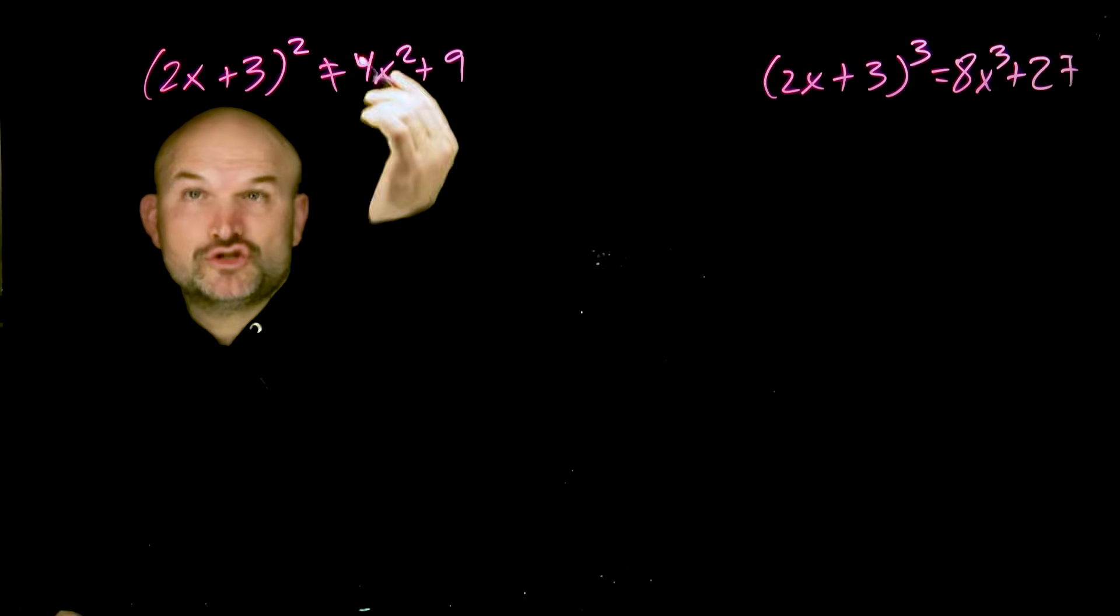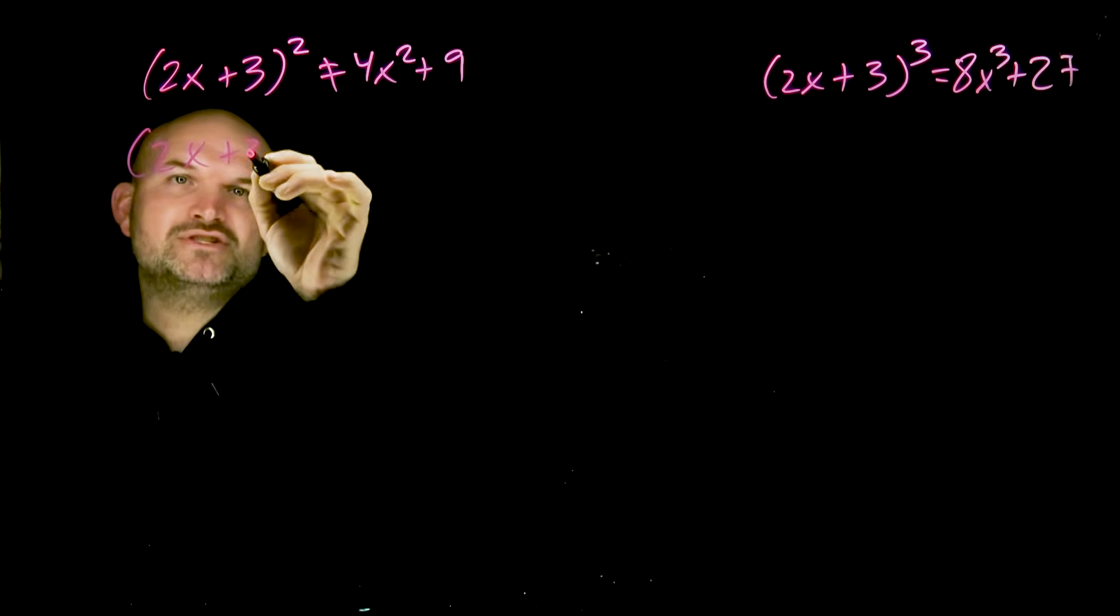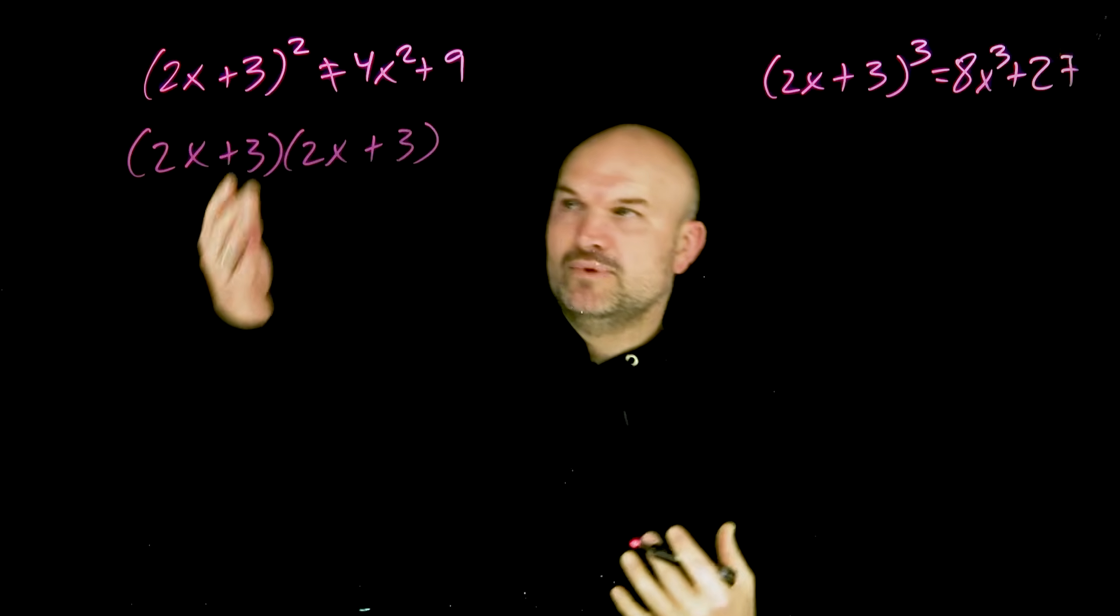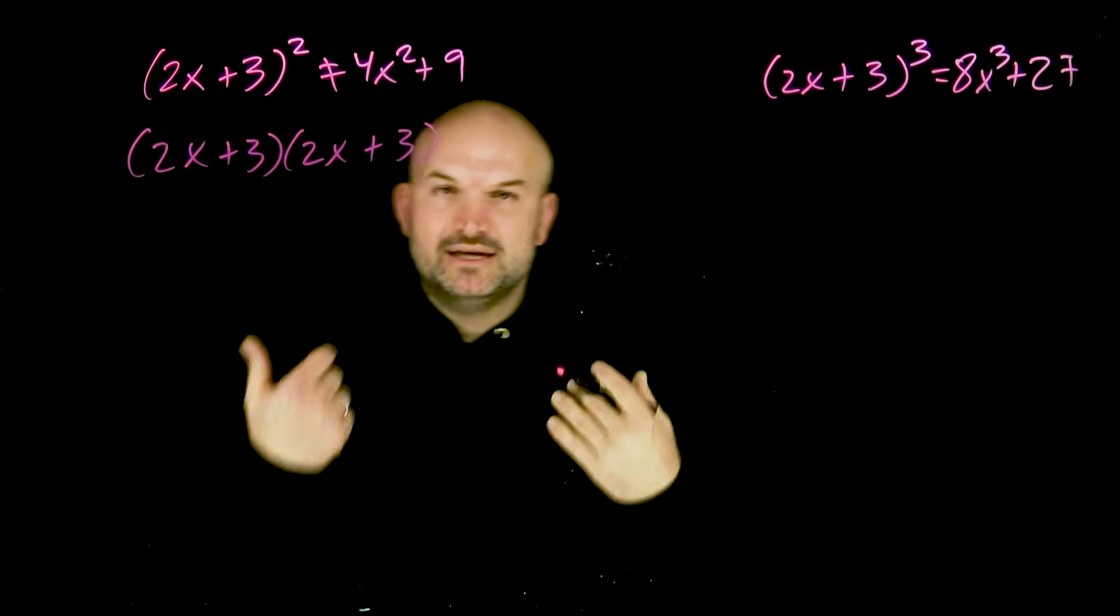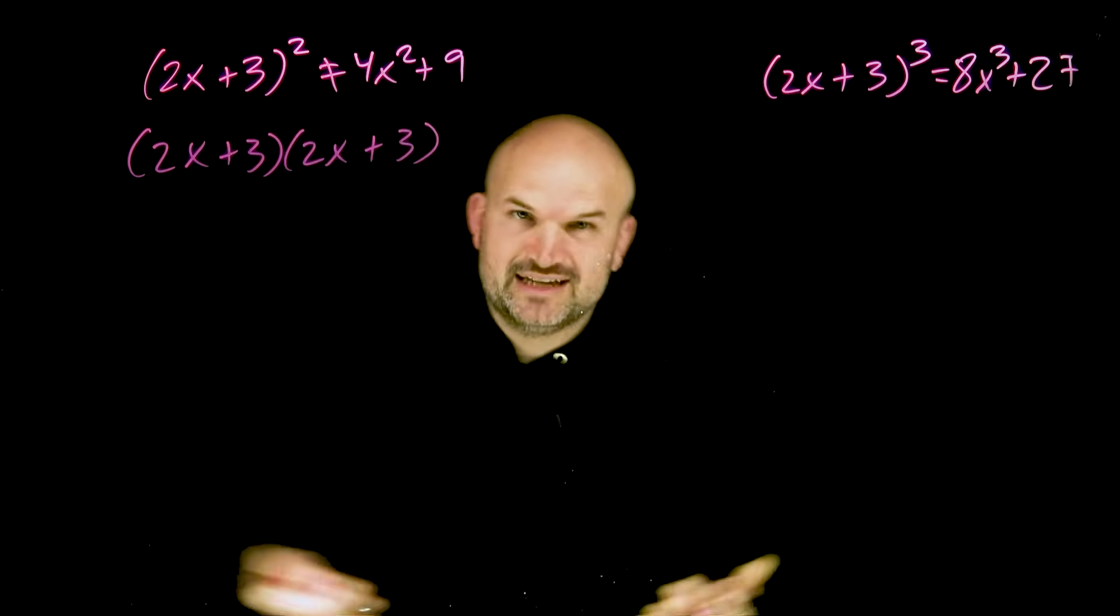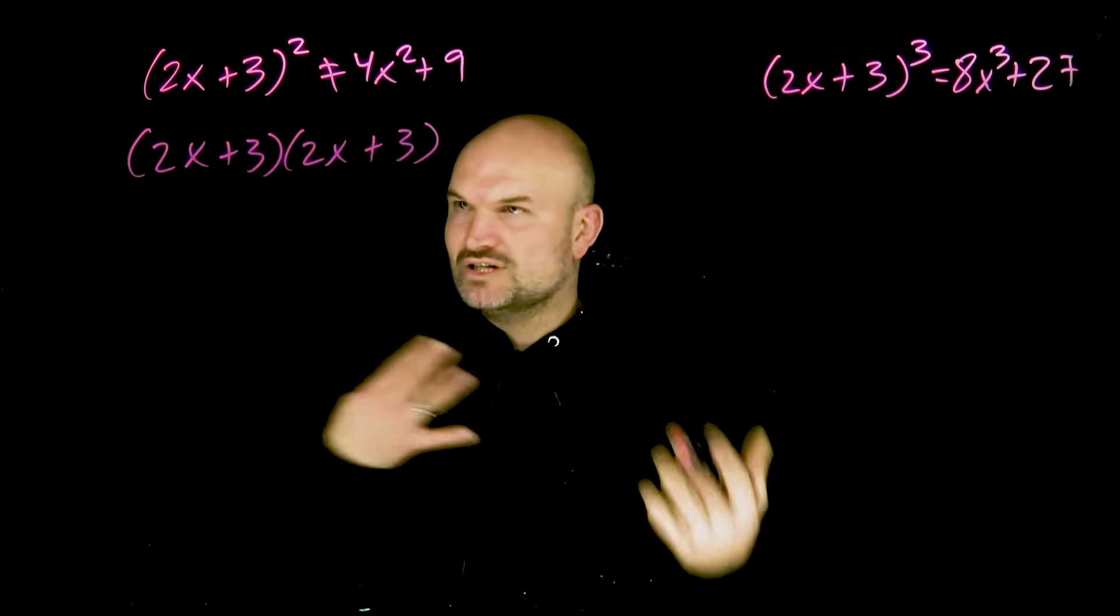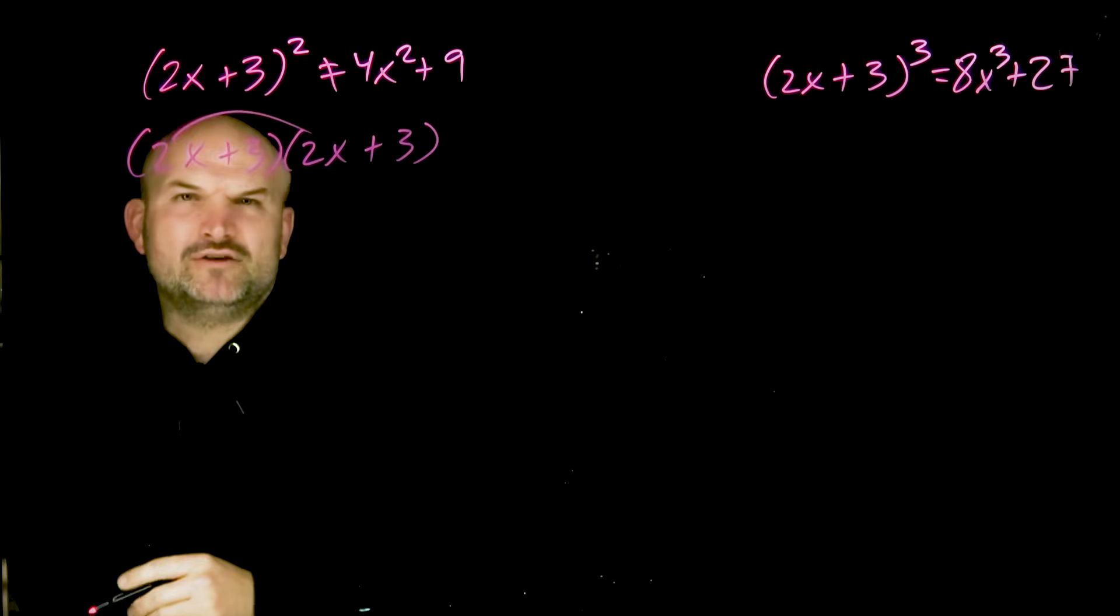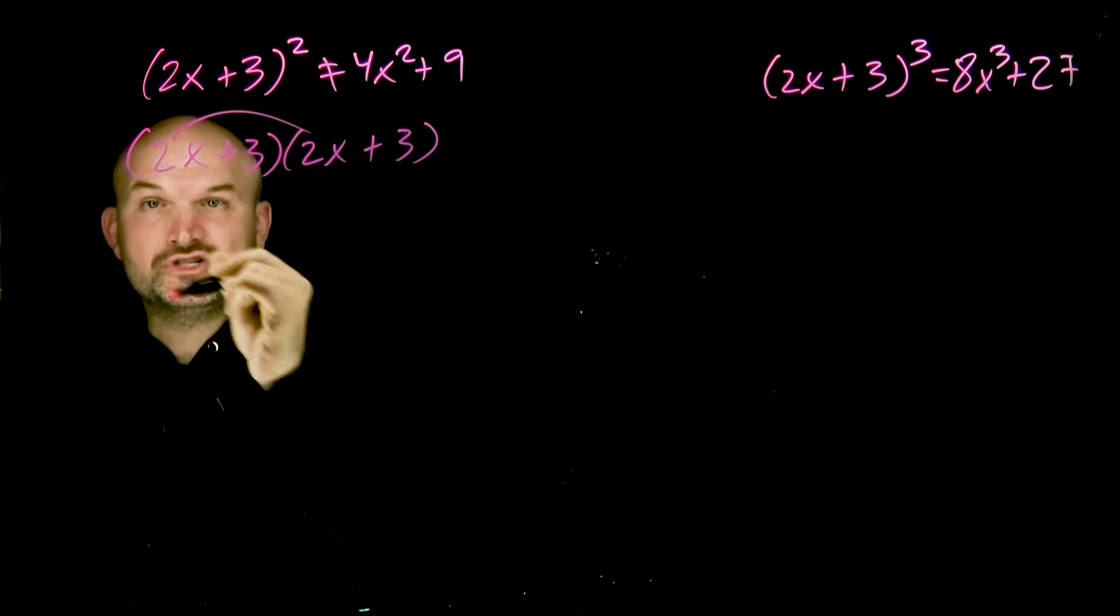So remember, 2x plus 3 squared means 2x plus 3 times 2x plus 3. When we have a binomial times a binomial, we can apply distributive property. You can think of it as FOIL, whatever works for you. In this case, I'll follow FOIL. So we'll do 2x times 2x, the first two terms, which gives me 4x squared.